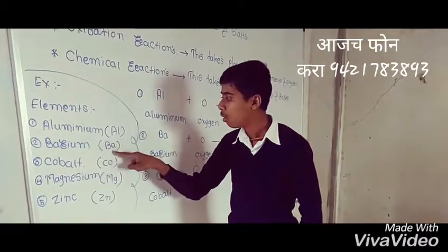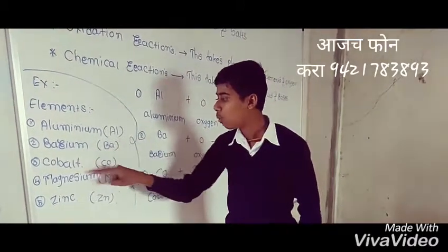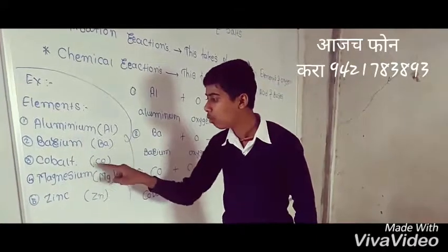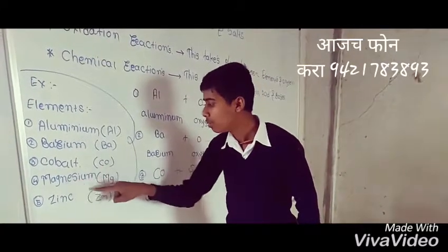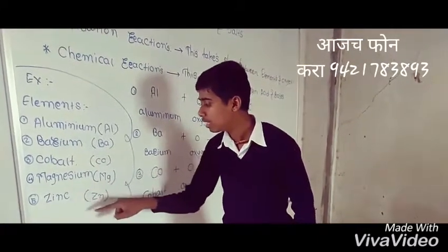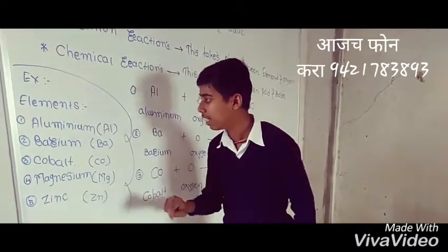The symbol of barium is Ba. The symbol of cobalt is Co. The symbol of magnesium is Mg. The symbol of zinc is Zn.